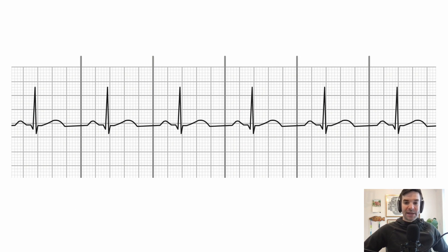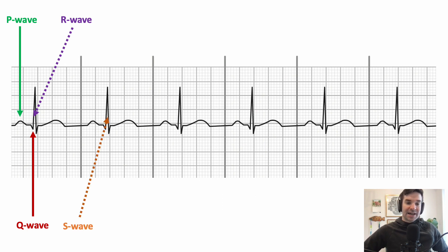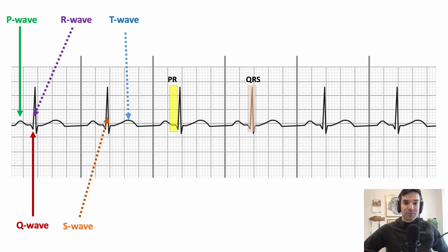Let's walk through a basic strip and refresh your memory on what all this means. First up is the P wave — you see this positive deflection — and then a Q wave, thereafter the QRS. The first positive uptick is the R wave, and then you see a negative downturn, which is the S wave, and then the T wave thereafter. There are also segments: between the P wave and the R wave, that's the PR interval; from the Q to the S, that's the QRS interval; and then the QT interval.